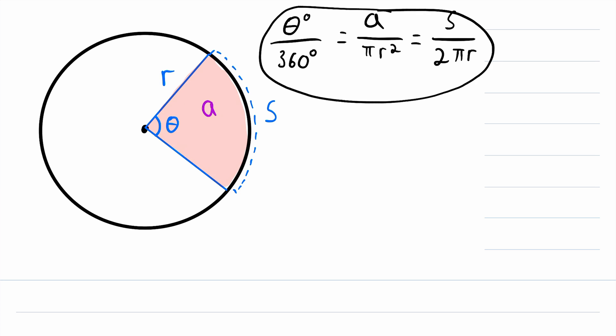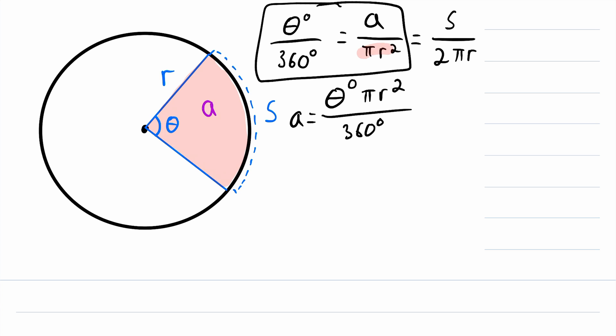So looking at these equalities here, we could use the measure of the central angle and the radius to solve for the area of the sector, or we could use the measure of the arc length and the measure of the radius to solve for the area of the sector. If we wanted to use this equality here that uses the central angle measure, then we would just multiply both sides of the equation by pi R squared in order to solve for A. That would give us A is equal to theta degrees multiplied by pi R squared, and it's all getting divided by 360 degrees.